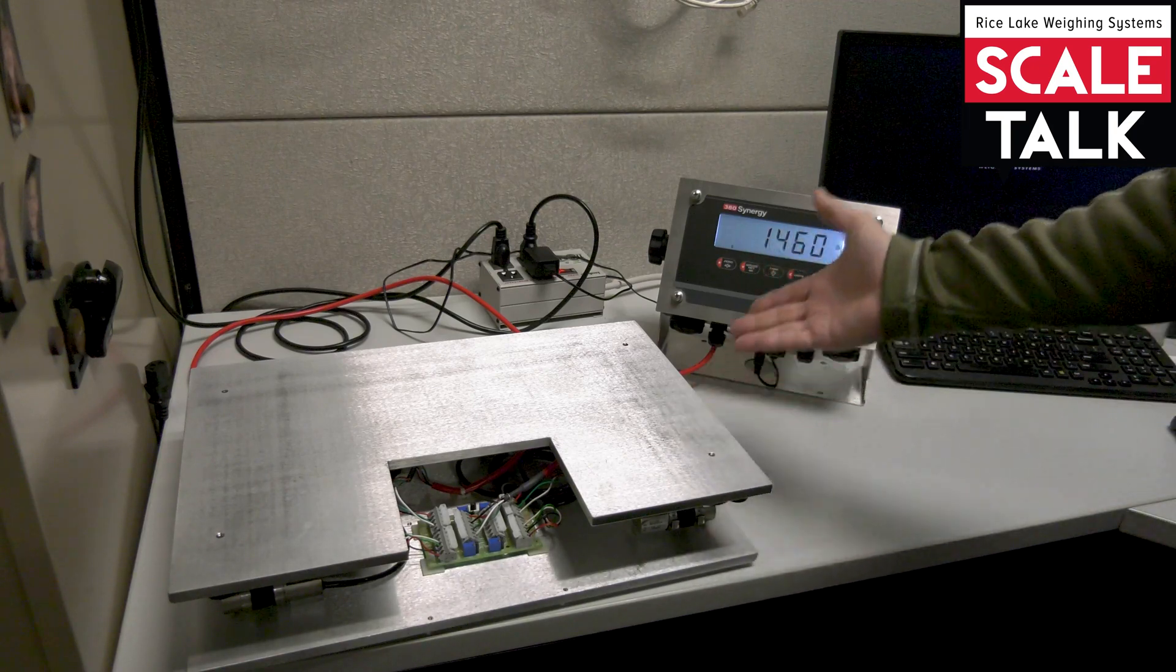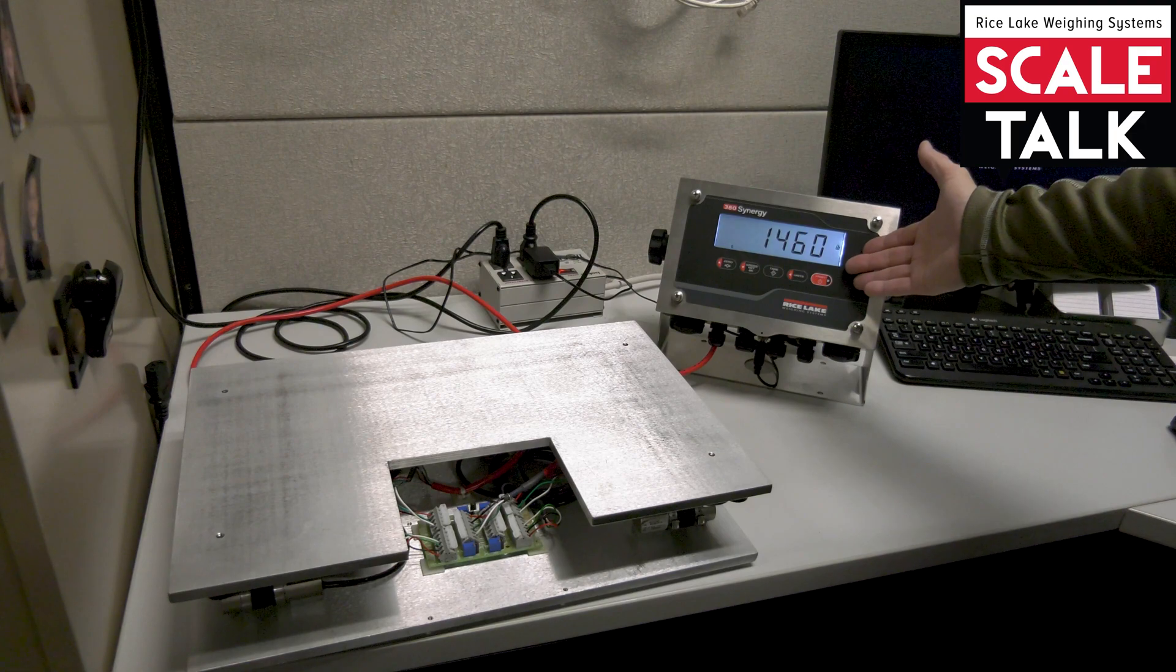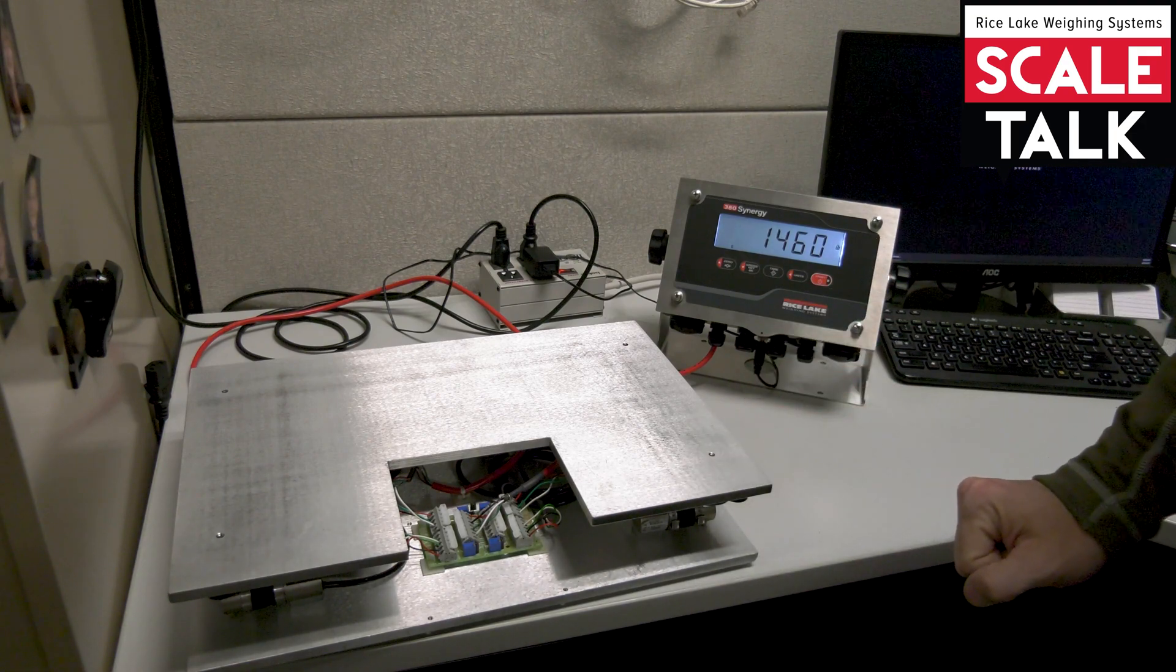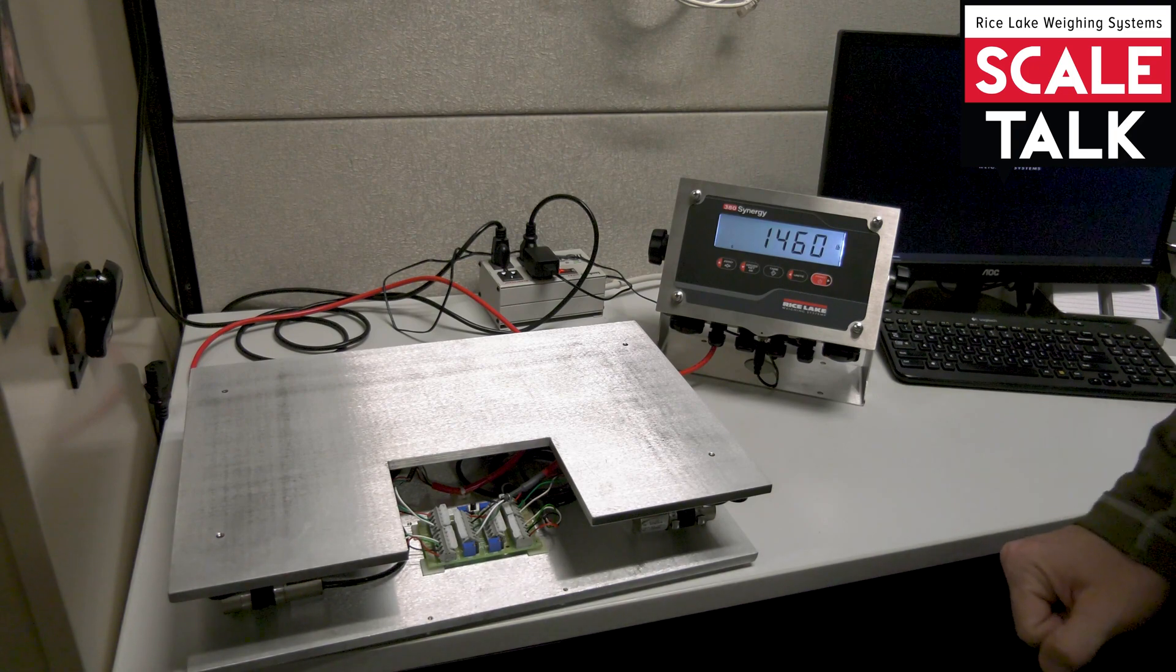Now there's no weight on the scale at the moment and our display reads 1460 pounds, so clearly this is not properly set up or calibrated. So let's go ahead and do that.